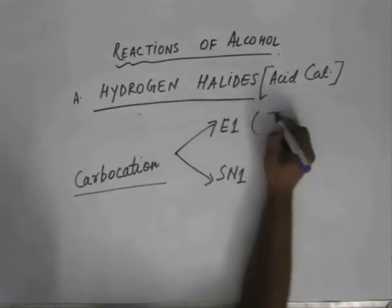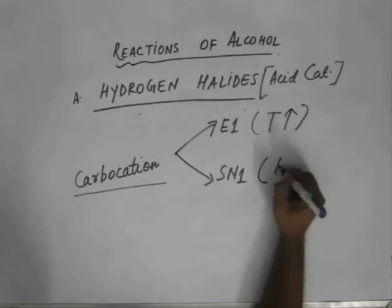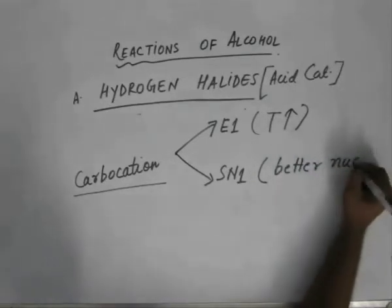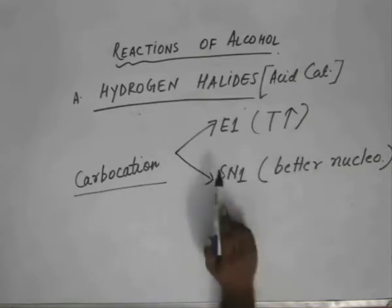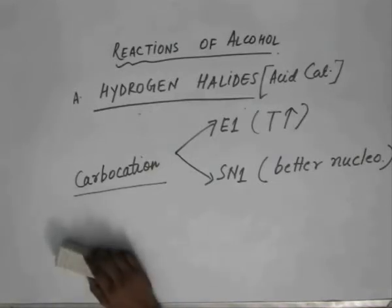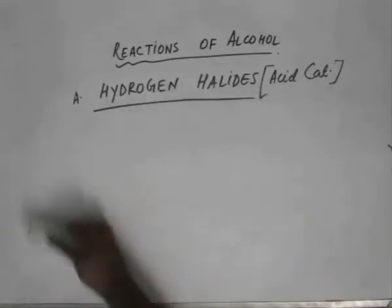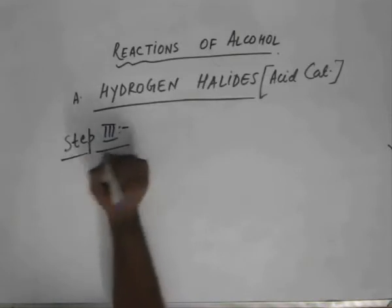If the temperature is high, elimination is favored. If we have better nucleophiles, SN1 is favored. If the temperature is higher and we have poor nucleophiles, elimination is favored. So after the generation of the carbocation we are left with two options: either we have an elimination reaction, or we have a nucleophilic substitution unimolecular reaction. Now we will see step three where nucleophilic substitution reactions take place.